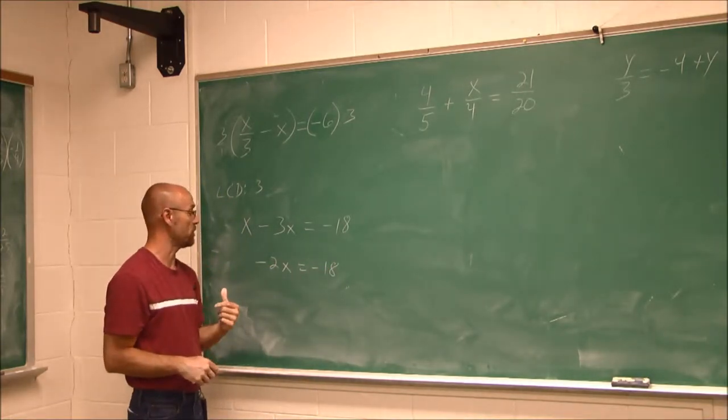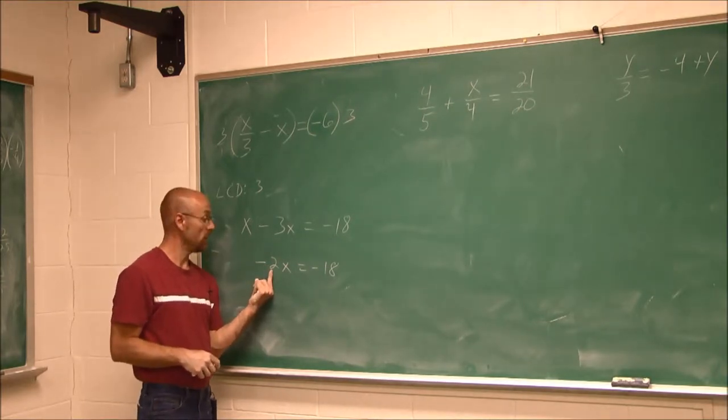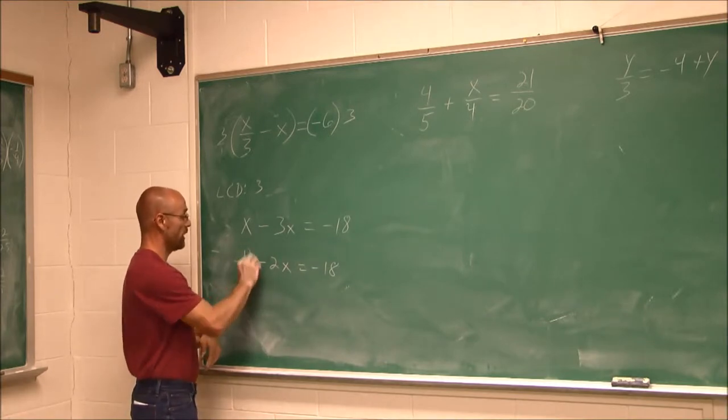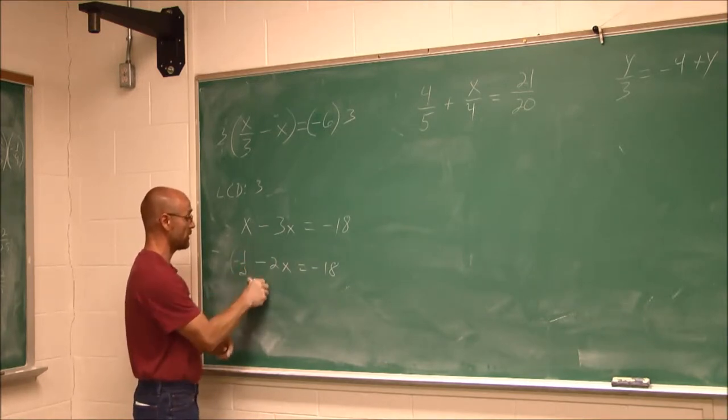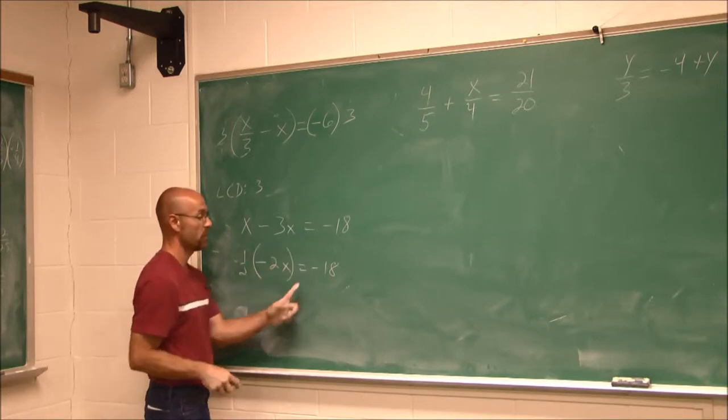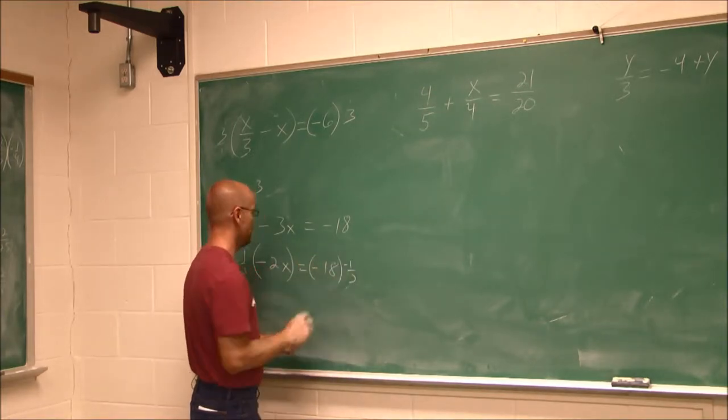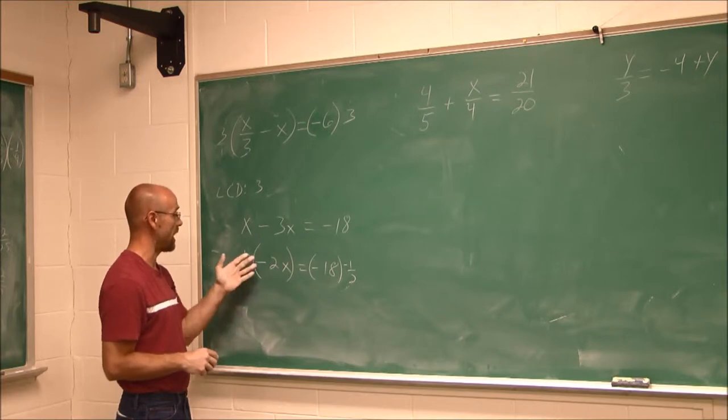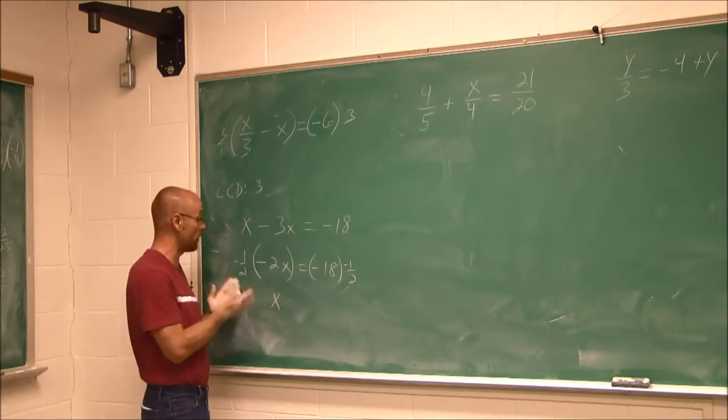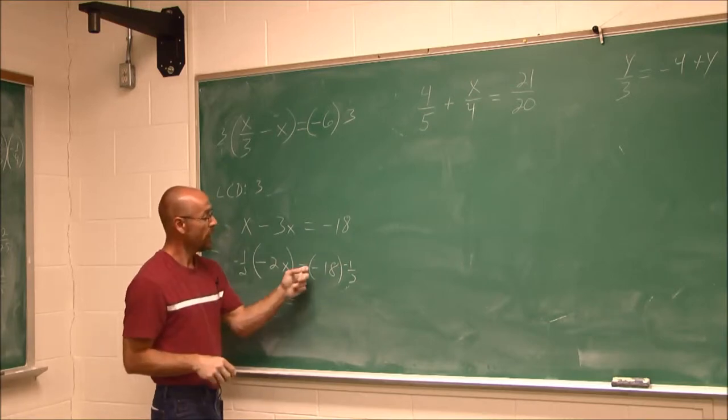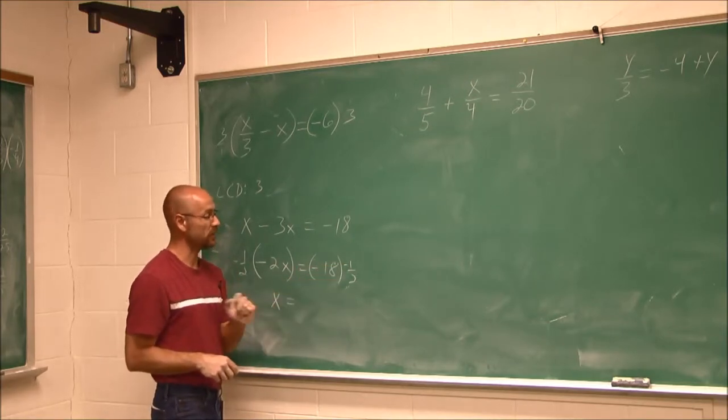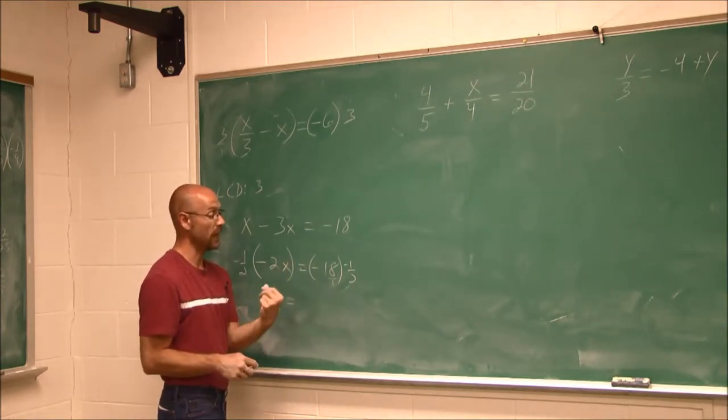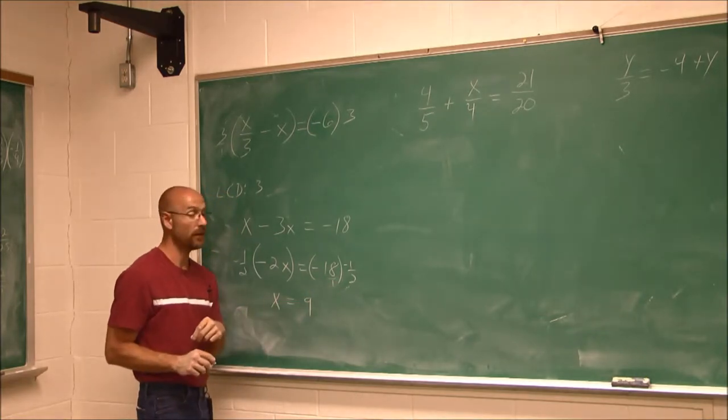So now I've combined like terms. And now it's just like the previous example. I can multiply by the reciprocal of this coefficient. The reciprocal of negative 2 is negative 1 half. Multiply this times that. What I do to one side, I have to do it to the other. Now a negative times a negative is positive. And half of 2 is 1. 1x. That was our goal. A negative times a negative is positive. 18 can reduce that 2. 2 goes into 18 9 times. x equals 9 is our solution.